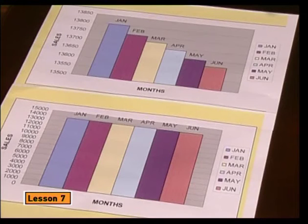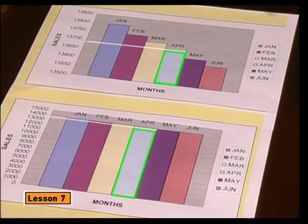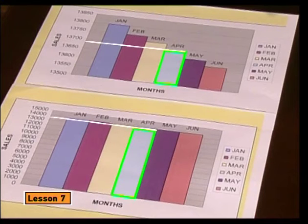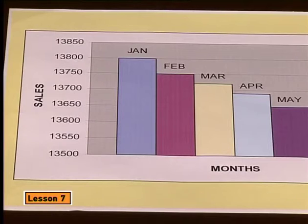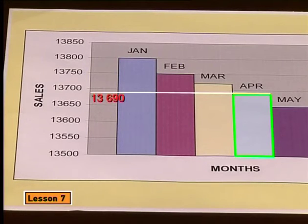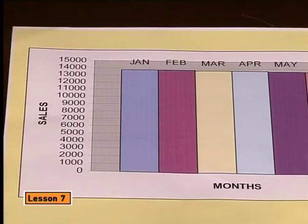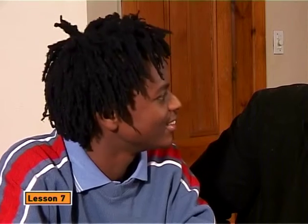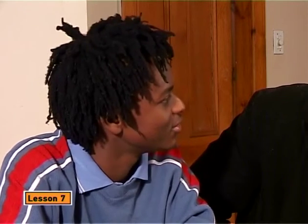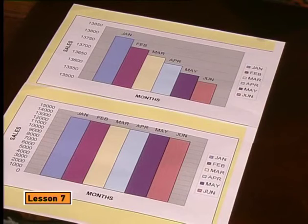Well, what if I told you that they are actually the sales figures of the same shop for the same time period? But they don't look the same. Why don't you take a closer look? Have a look at the figures for April. On the first graph it gives you about 13,690 rand. On the second graph it gives you almost 13,700 rand. You're right — the numbers look the same, but the graphs are different. So how do you think such different graphs were drawn from the same information?